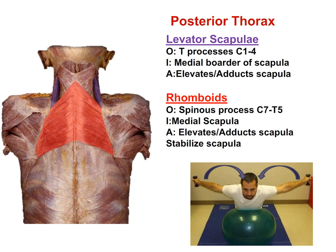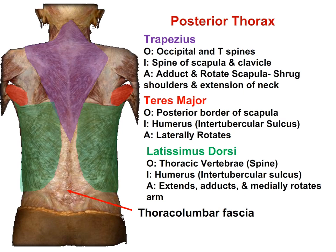A good exercise to build the rhomboids involves adducting or retracting the scapula — bringing the flat blade portions closer together. To summarize the superficial back muscles: the trapezius functions for extension and hyperextension of the neck and shrugging the shoulders; the teres major is a synergist of the latissimus dorsi; and the latissimus dorsi's major function is forceful extension and adduction of the arms.